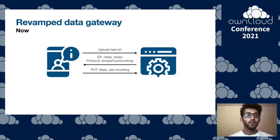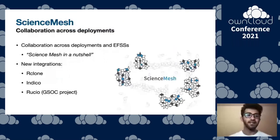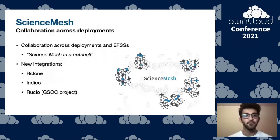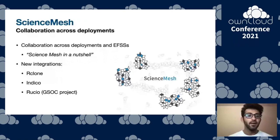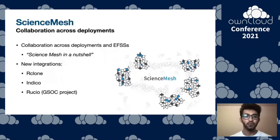Let's look at Science Mesh now. This is a European project which aims at enabling collaboration across deployments and EFSSs — Kuba from CERNBox talked about this in detail earlier today in a presentation titled 'Science Mesh in a Nutshell.' As part of this project, we have many new integrations inside ownCloud and OSIS. We've integrated Rclone, a tool to sync across various storage backends supporting WebDAV, now integrated with Reva so you can sync two deployments or sync with AWS or Google Cloud. We've also integrated Indico, an event management app developed at CERN, and Rucio, a data transfer tool used in the worldwide computing grid at CERN.